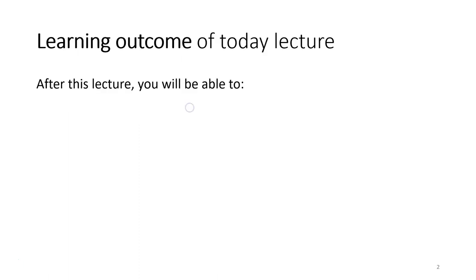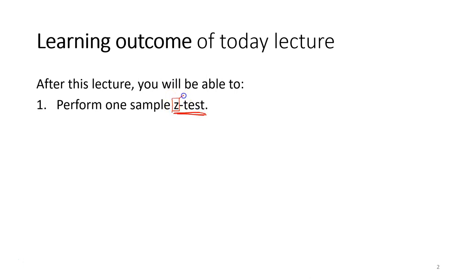Last week you learned how to formulate statistical hypotheses, and after forming the pair of hypotheses you also learned how to set up a significance level, which is the criteria you use as a guideline to reject or not reject the null hypothesis. The next step is to perform a statistical test. The first test you are going to learn is a one-sample test, and the z-test is one of the tests we use for this.